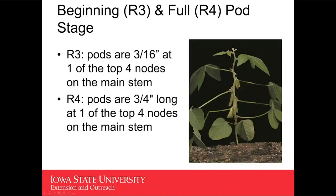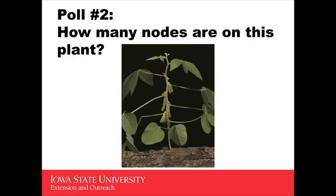Then we have the pod stages. The key with the reproductive stages is knowing which nodes to look at. At R3, we're looking for pods that are three-sixteenths of an inch at one of the top four nodes on the main stem. At R4, the full pod stage, those pods are three-quarters of an inch long at one of the top four nodes. So pod presence and pod length determine when we're at R3 and R4.